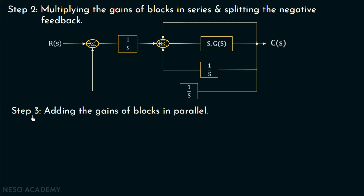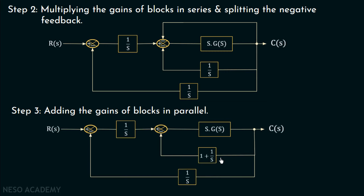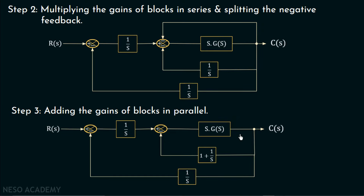In step 3, we add the gains of blocks in parallel. The resultant combination has gain 1 plus 1/s, connected to the adder with negative polarity. Now, these two blocks form a closed loop system with negative feedback, where the forward path gain is s·G(s) and the feedback path gain is 1 plus 1/s. We can convert this into a single block using the closed loop transfer function.